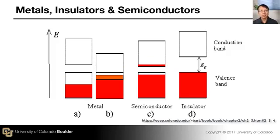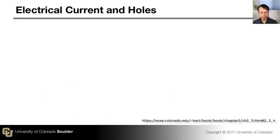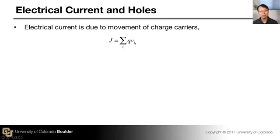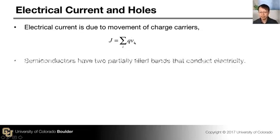So a semiconductor is different from a metal in that there are two types of conductivity, arising from the conduction band and the valence band. In the case of a metal, there is only one partially filled energy band responsible for electrical conductivity. That is a fundamental difference between conduction in a metal versus conduction in a semiconductor. Now let's consider electrical current. Electric current is defined as the movement of charge carriers. The total current density J is simply a summation of the charge each individual carrier carries multiplied by its velocity.